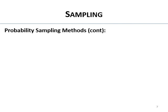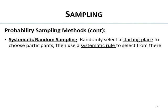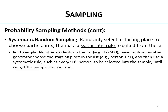There's also systematic random sampling. This is when you randomly select a starting place to begin choosing participants, and then you use some systematic rule from there to continue selecting.